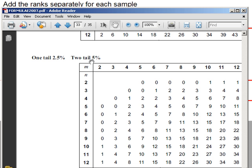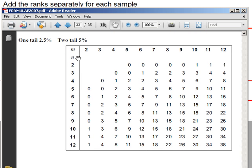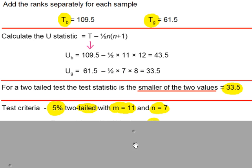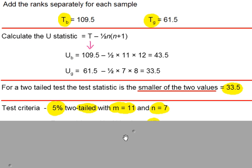We're doing a two tail test at the 5% level, so we're looking at this table. The m and the n represent the sample sizes of your two samples and our sample sizes are 11 and 7. So there's 11, there's 7, that gives a critical value of 17, or you can do the other way around, there's 7 and there's 11, same value, 17.